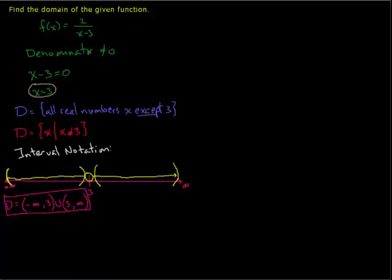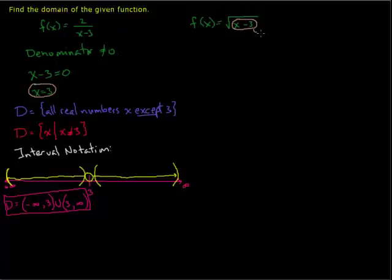Now let's consider a different function: f of x equals the square root of x minus 3. In this case, we want to remember the rule that the expression under the radical cannot be negative. So x minus 3 must be greater than or equal to 0. Remember, it can equal 0 because the square root of 0 equals 0 — that's okay. But we can't take the square root of a negative number and get a real number.